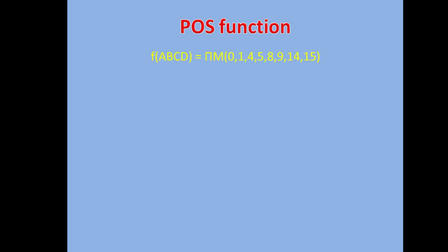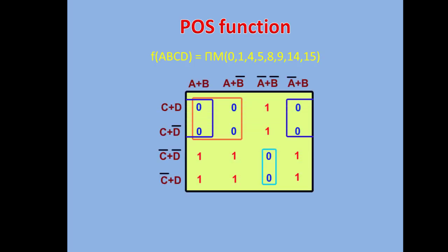Next is the POS function. We use this POS function: capital sigma M(0,1,4,5,8,9,14,15). We insert all these cell numbers as zeros and draw the POS K-map. In this case we get two quads and a pair. The colors show the equation — orange for one quad, blue for another quad, and light blue for the pair.